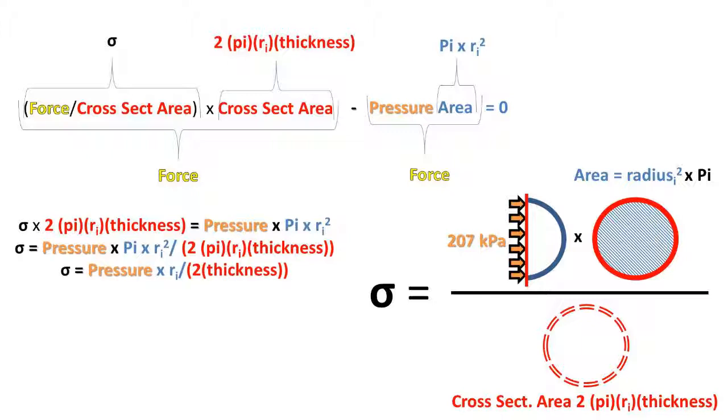Now we have the stress to one side, so we can start reducing the formula. We notice that pi and one of the internal radiuses cancel out. So we are left with pressure times the internal radius over 2 times the thickness equals stress.